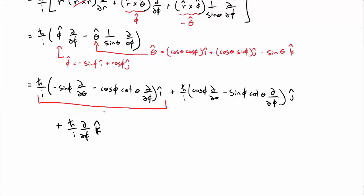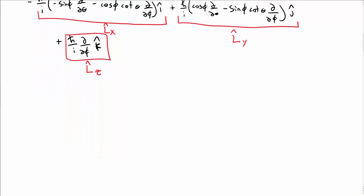So this quantity, this first term here, is L hat x, this quantity here is L hat y, and then this quantity here is what we were looking for from the beginning, this is L hat z. So we are now able to find the ordinary differential equation for the eigenfunctions of the L z operator. So let's do that.